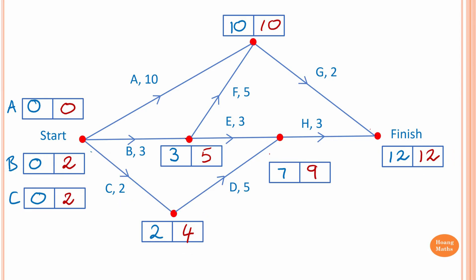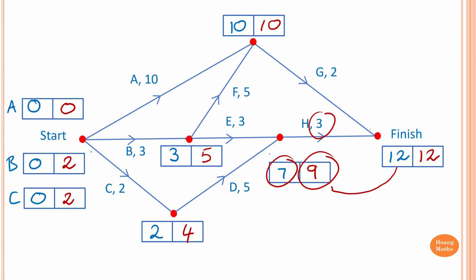Looking at activity H: the earliest start is 7 hours, and the latest you can start is 9 hours. The duration of this activity is 3 hours. You can verify this by going 12 minus 9, which gives you 3 — that is the duration for activity H.